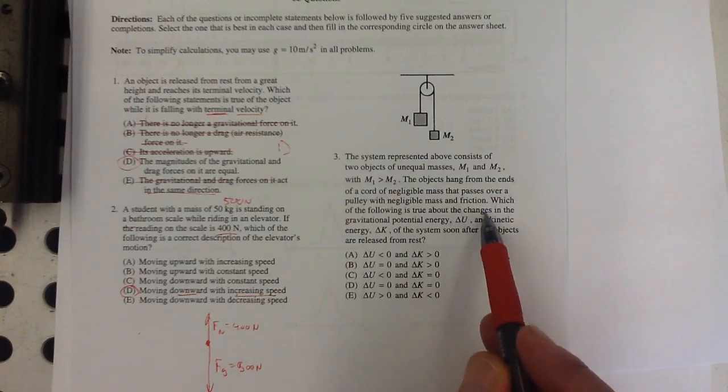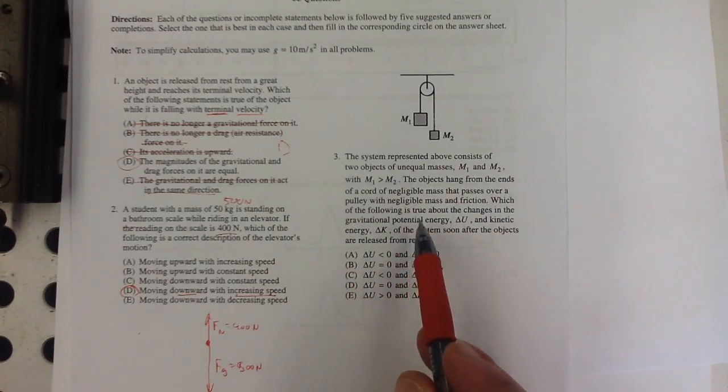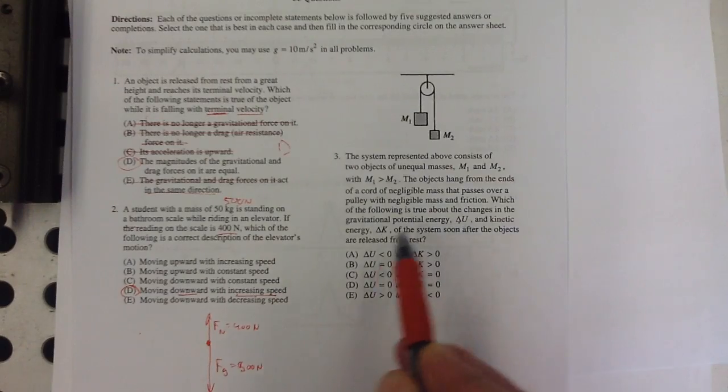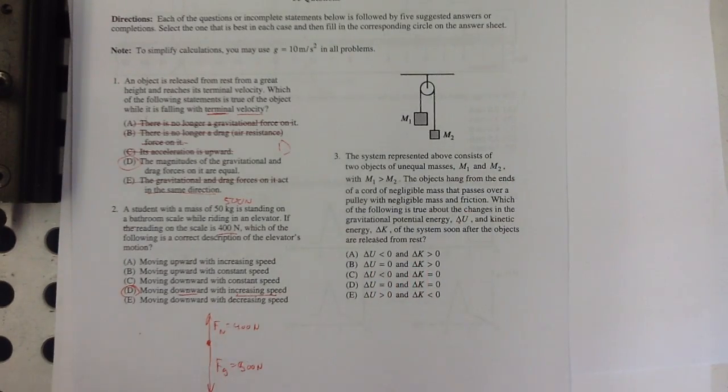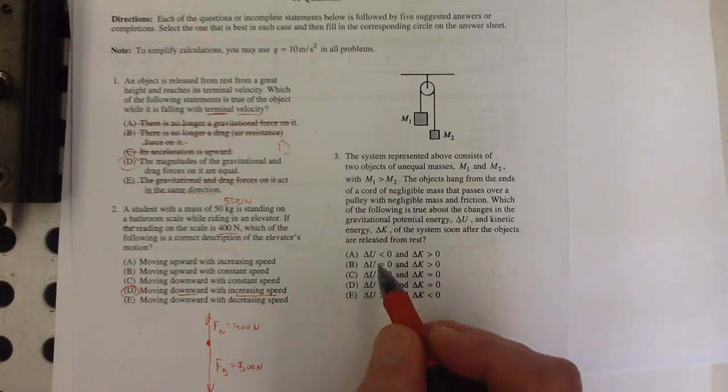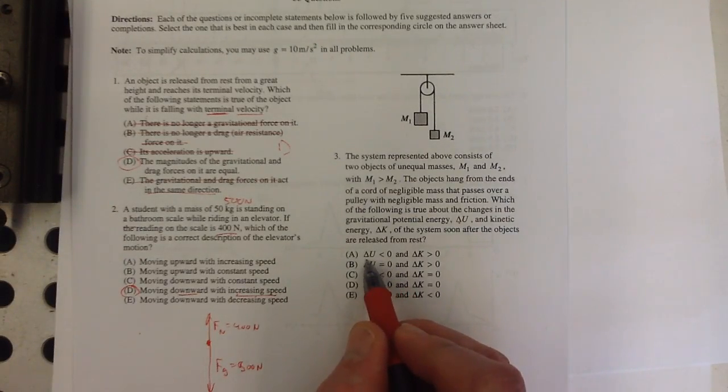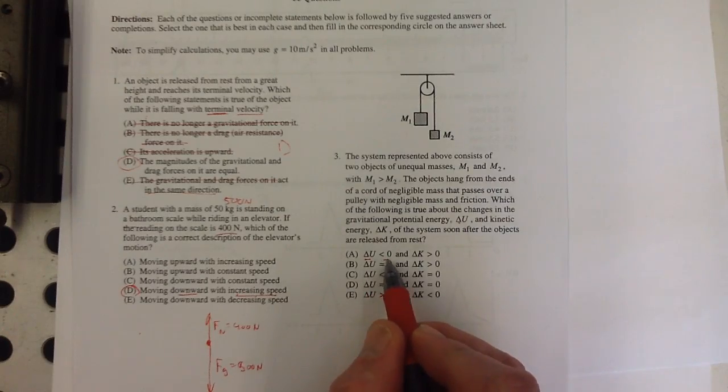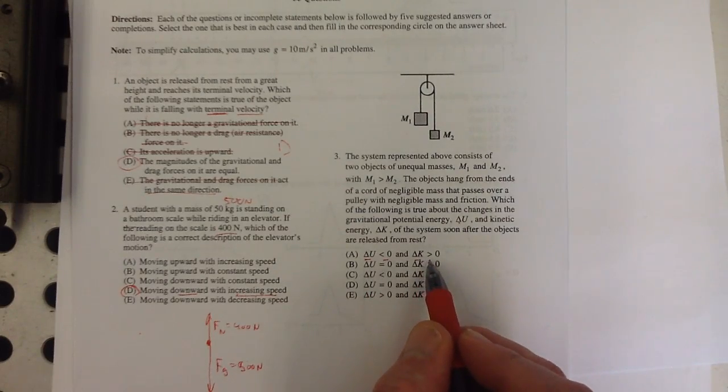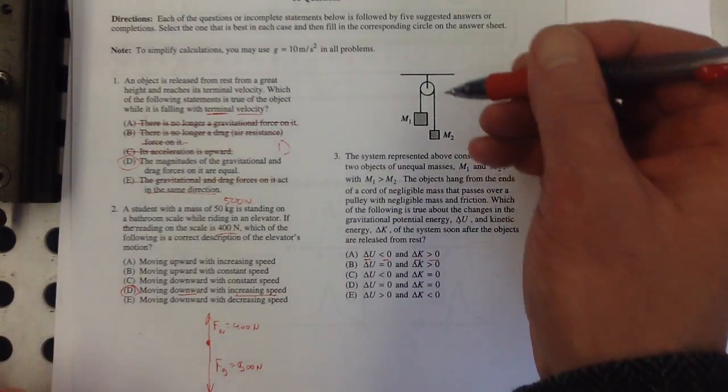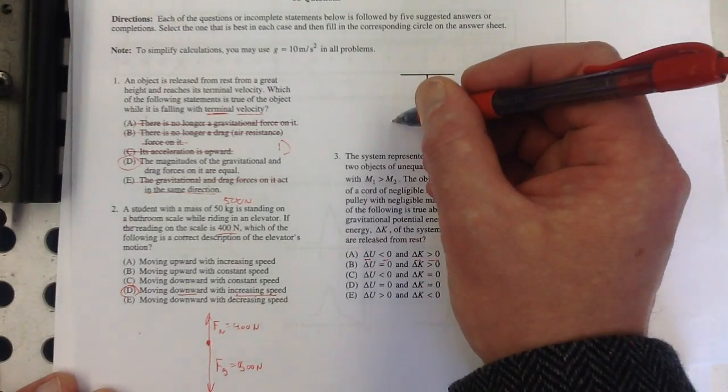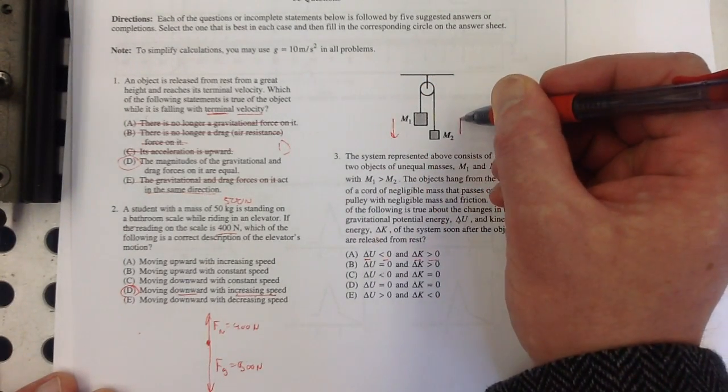Which of the following is true about the changes in gravitational potential energy delta U and kinetic energy of the system soon after the objects are released from rest? So the change in gravitational potential energy is less than zero, and the change in kinetic energy is great. Well let's just think about what's going on here. When we release this, this is gonna go down and this is gonna go up. Right?